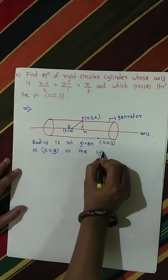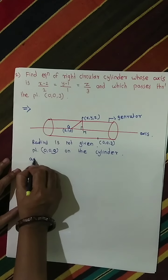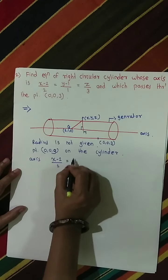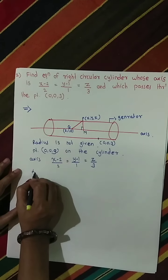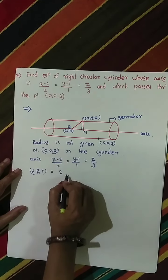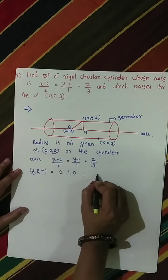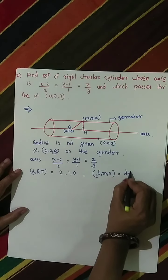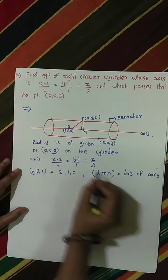The equation of the axis is (x minus 2)/2 = (y minus 1)/1 = z/3. So alpha, beta, gamma equals (2, 1, 0) and the direction ratios of the axis, l, m, n, are 2, 1, 3.